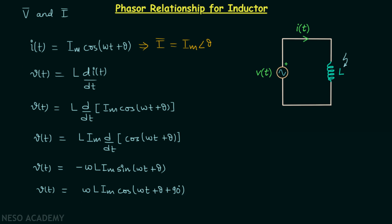From this cosine form we can obtain the phasor representation of voltage V(t). We will have the voltage phasor V equal to ωL·Im ∠(θ + 90°).